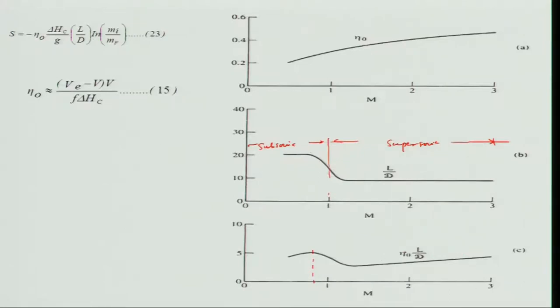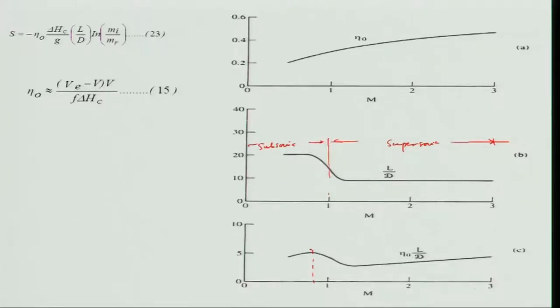This indicates maximum range is obtained flying at around subsonic Mach 0.85. That is why all long-range passenger aircraft fly subsonic — not supersonic. Flying supersonic (e.g., for military purposes) requires paying a fuel penalty.